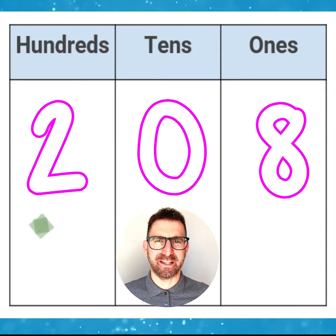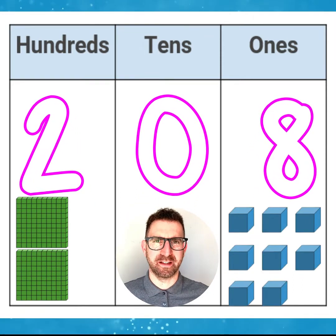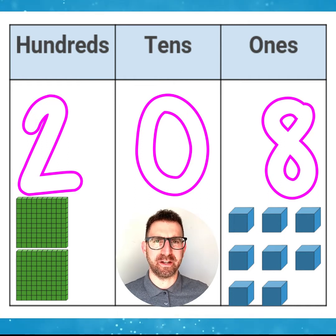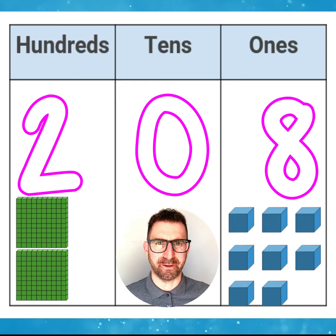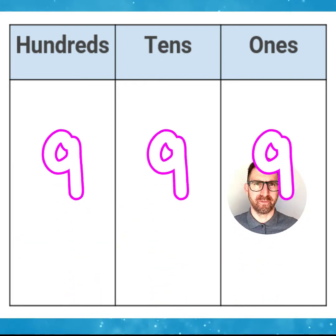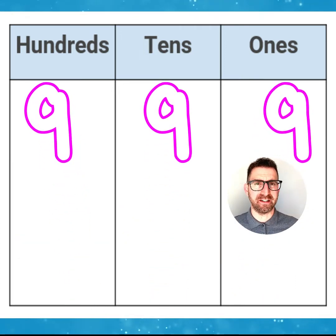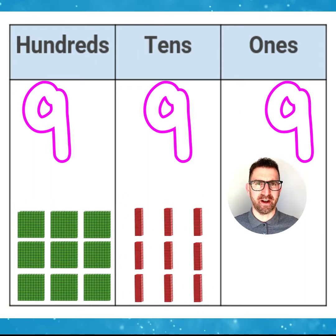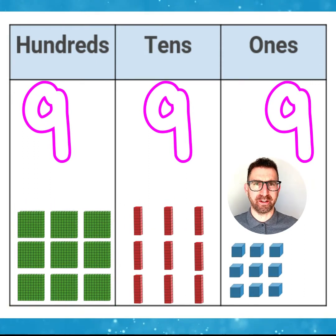The next number is 208. We would need 2 hundred flats and 8 one cubes, but no ten rods. A 0 is used in the 10's place column to hold the number's value. Finally, let's look at the number 999. We would need 9 hundred flats, 9 ten rods and 9 one cubes.